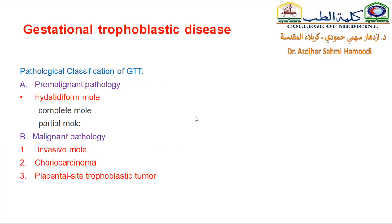The pathological classification of gestational trophoblastic tumors is of two types: pre-malignant and malignant. The pre-malignant type consists of hydatidiform mole, which is of two types: complete mole and partial mole — and this is the subject of our lecture today. The malignant type, which is the subject of our next lecture, consists of three main types: invasive mole, choriocarcinoma, and placental cytotrophoblastic tumor.